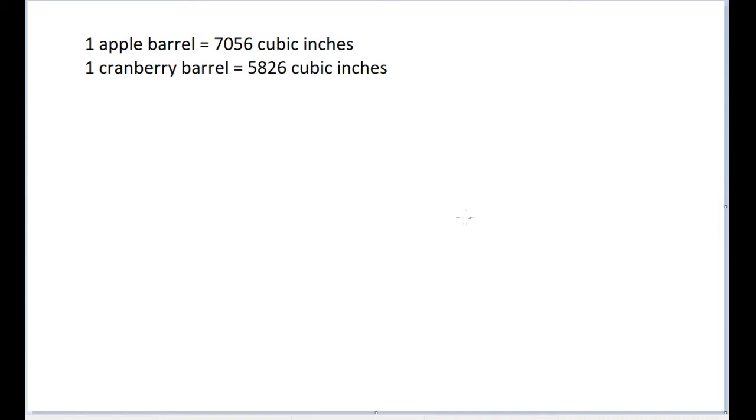All right, so this problem deals with two types of barrel units that apparently existed in the 1920s in the United States. According to the problem, anyway, I've never heard of this. They seem to be obscure units. But the point is, one apple barrel, as it's called, is equal to about 7,056 cubic inches, and one cranberry barrel is equal to 5,826 cubic inches.